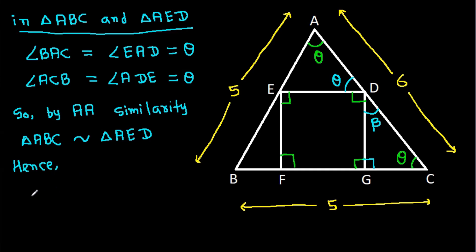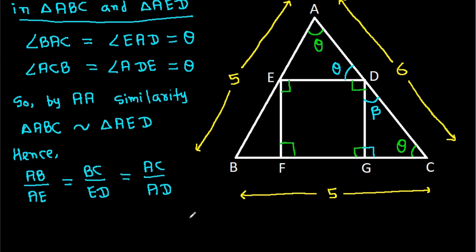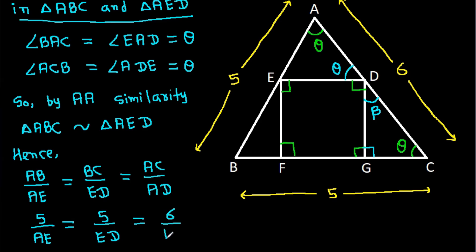Hence, AB over AE equals BC over ED equals AC over AD.